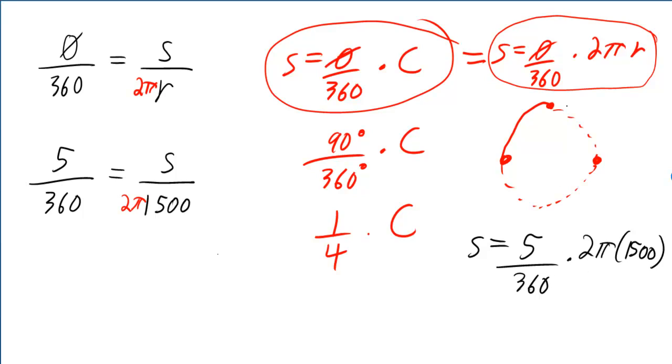And you'll notice this is exactly what you would get if you multiplied both sides here by 2 pi times 1,500. Those would cancel out, and on this side you would get 2 pi times 1,500 times the 5 over 360, which is exactly what we got over here.